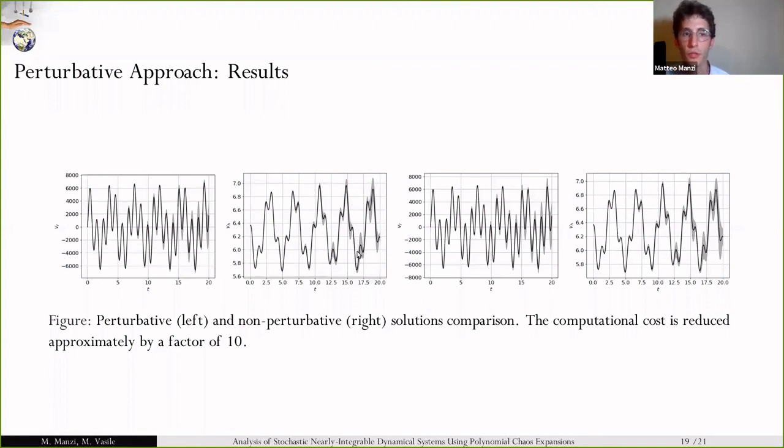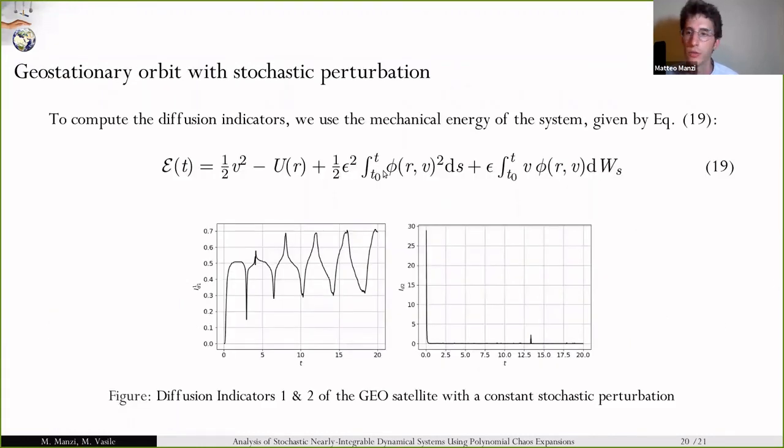Moreover, the perturbative technique led to a computational cost reduction of approximately a factor of 10. We can therefore use the solution of this problem to compute again the diffusion indicators. We use the mechanical energy of the system, which is known to evolve following this law. You can see how the energy is diffusing. Together with an oscillation, we have an increasing value of indicator one and a quickly decreasing value of indicator two. This indicates that the standard deviation and higher moments associated to the state of the system are quickly increasing, leading to a diffusion of the probability density function of the state.